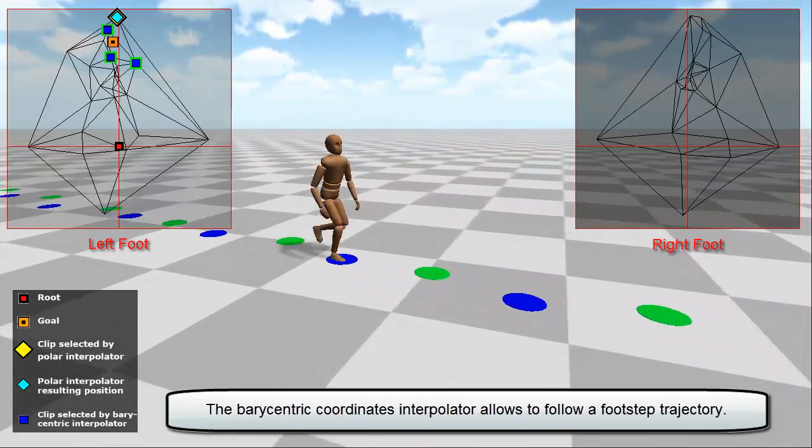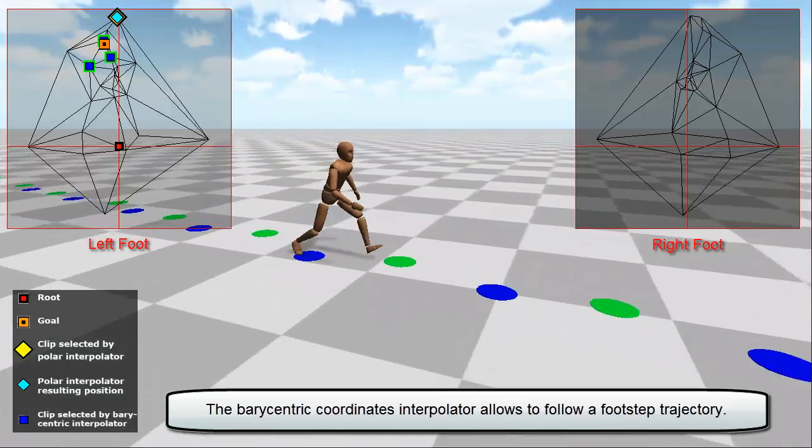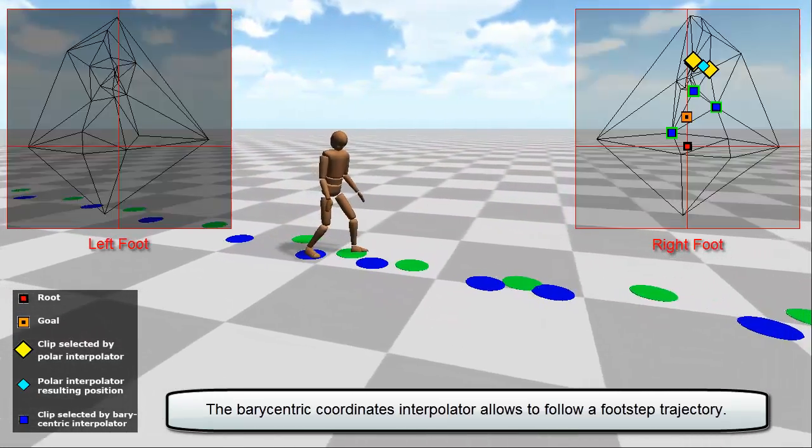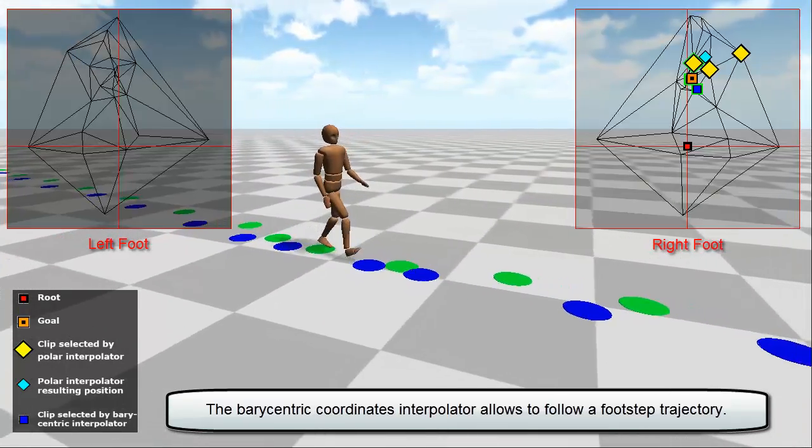Interpolation based on barycentric coordinates can closely follow the desired landing positions. We can now simulate different gaits and distances between the feet while walking or running.